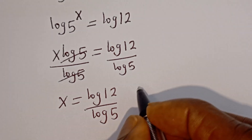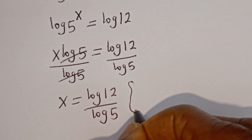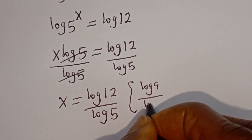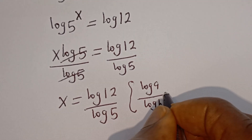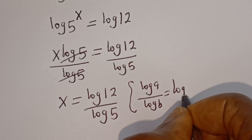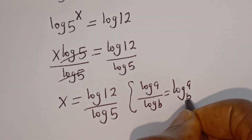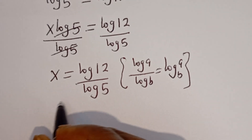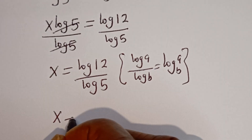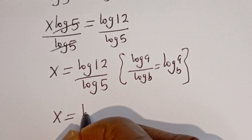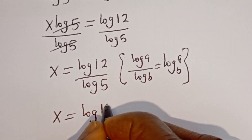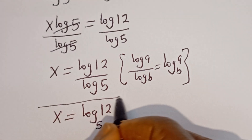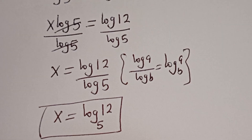Taking note that if you have log A divided by log B, this is equal to log A base B. Then this can be written as X is equal to log 12 base 5. This is the final answer.